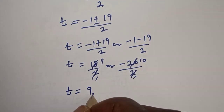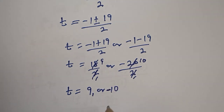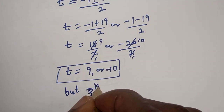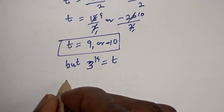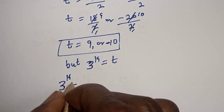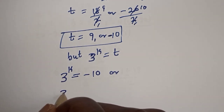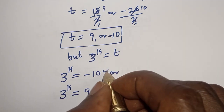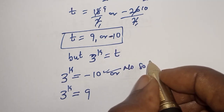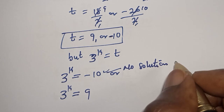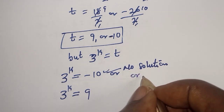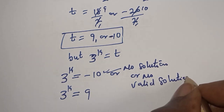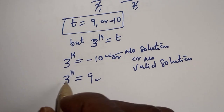T is equal to 9 or negative 10. But t raised to the power k is equal to t. So t raised to the power k cannot equal negative 10 — that has no valid solution. The only real solution we have is t equals 9.